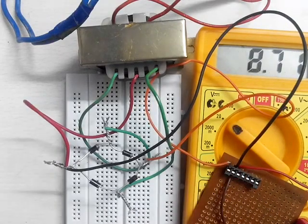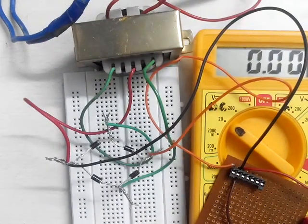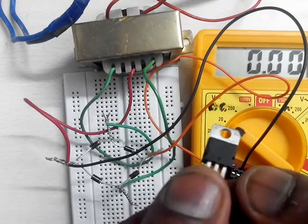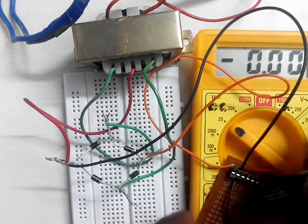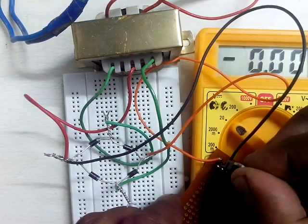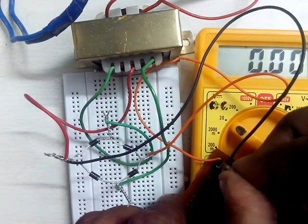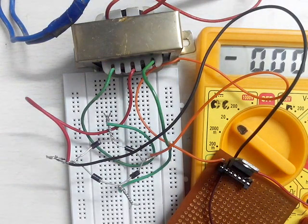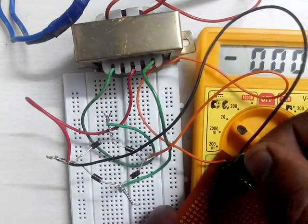Almost 11 volts. Now we will introduce the IC. This is 7805 IC. We will just insert this IC into the socket, this way.